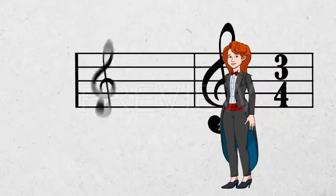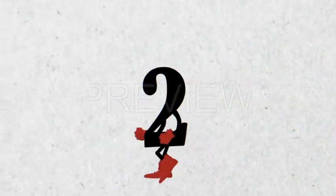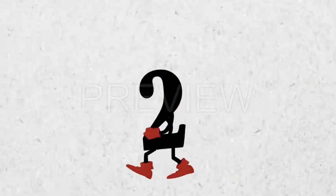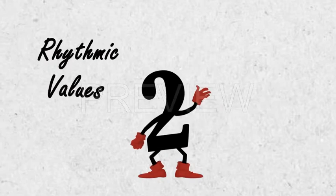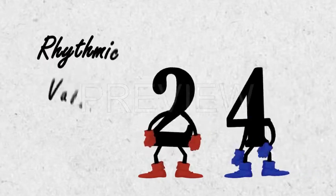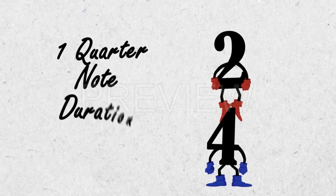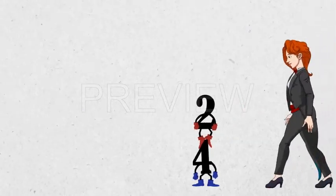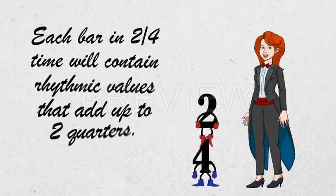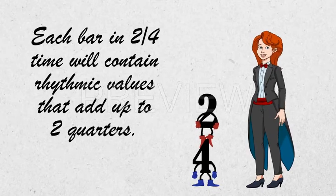In the case of a 2/4 time signature, the 2 tells us that each bar will contain two rhythmic values, while the 4 tells us that each of these beats will have the duration of a quarter note. So each bar in 2/4 time will contain rhythmic values that add up to two quarters.